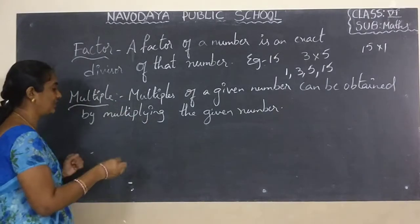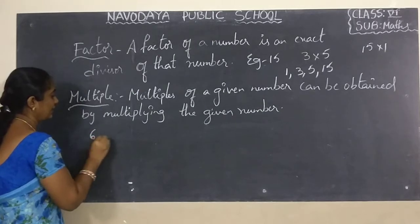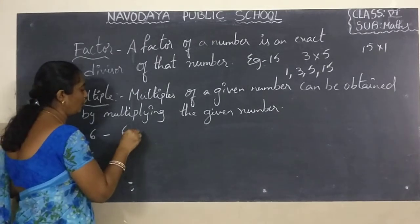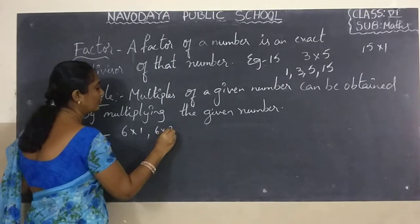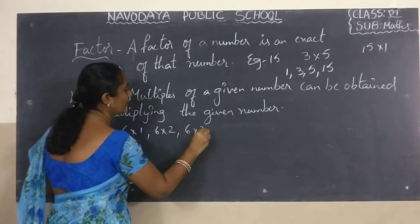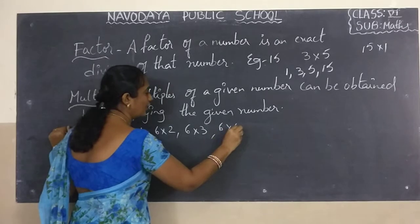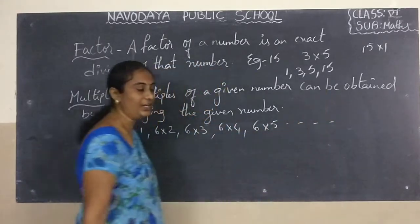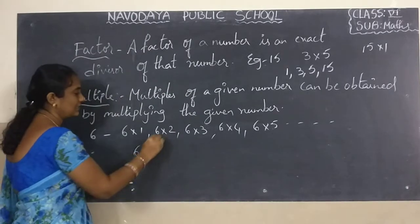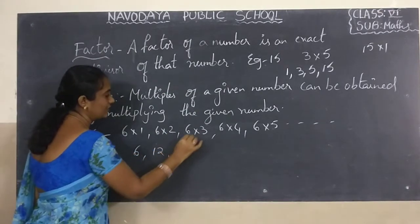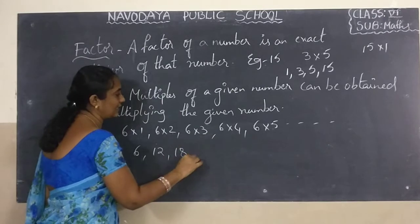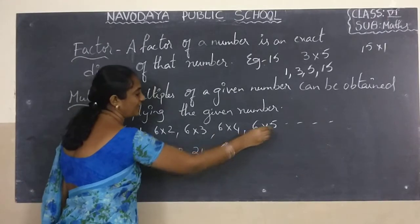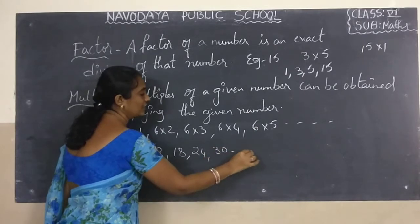For example, if you take 6, what are the multiples of 6? 6 into 1, 6 into 2, 6 into 3, 6 into 4, 6 into 5, and so on. That gives us: 6 ones are 6, 6 twos are 12, 6 threes are 18, 6 fours are 24, 6 fives are 30, and so on.